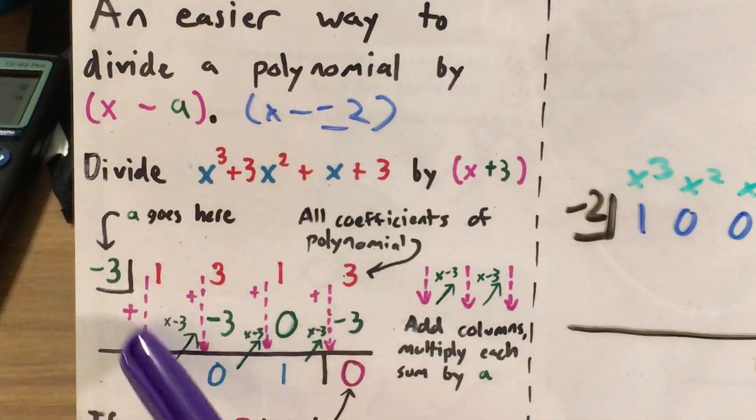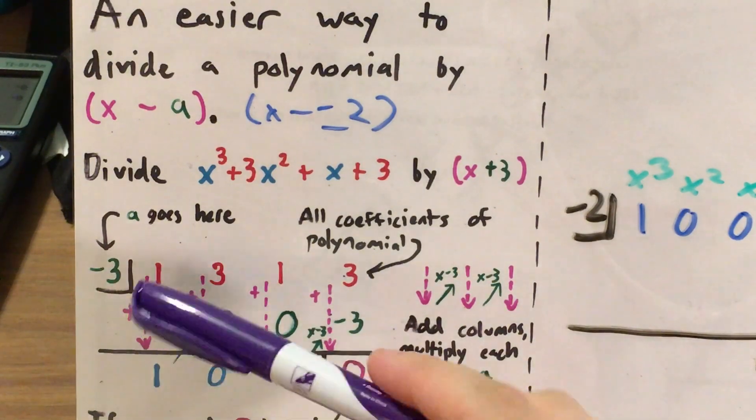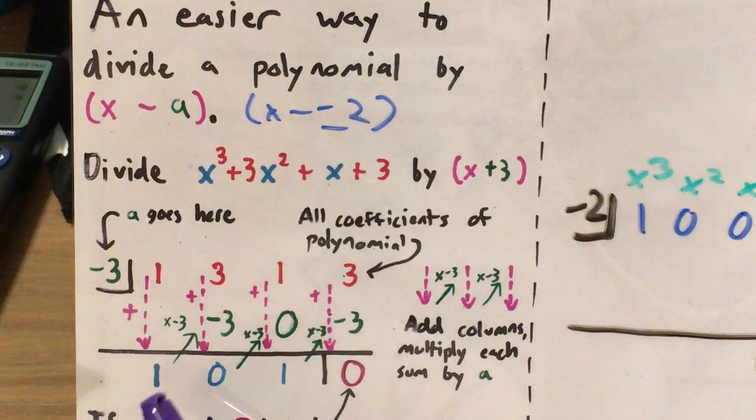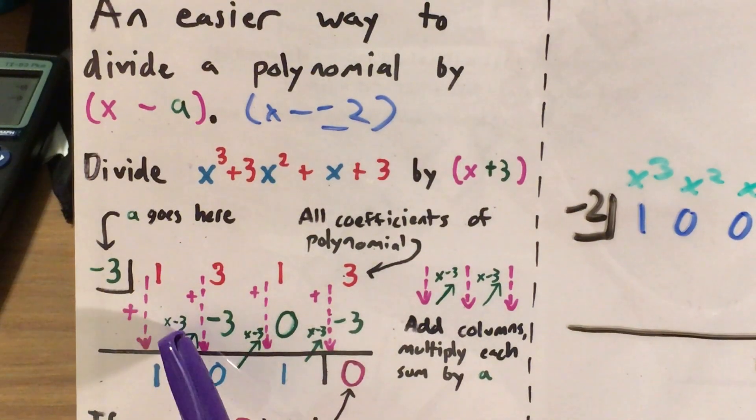If you look over here, you can see kind of a zigzag type thing where I'm adding as I go down every column. And then to get from this number to this number, I multiply by negative 3, which in this example was the number I was testing.